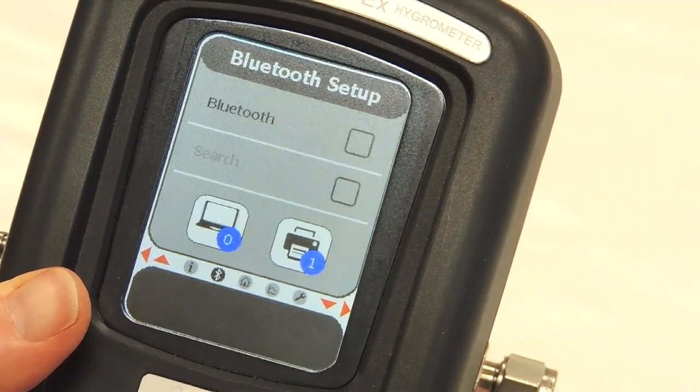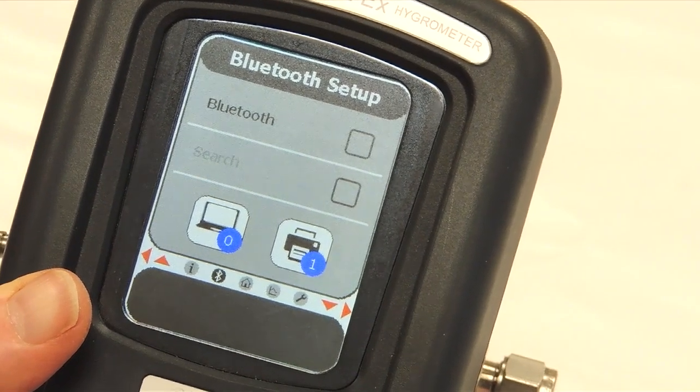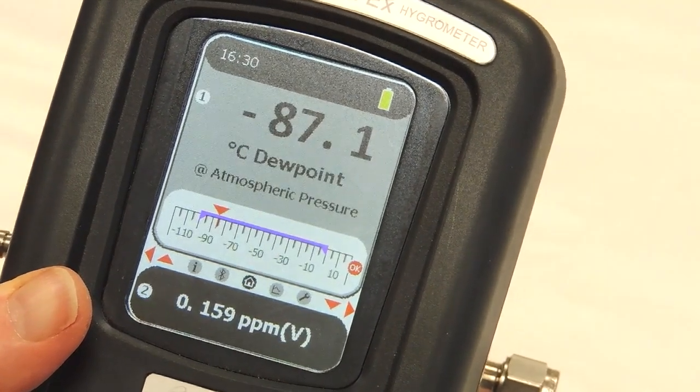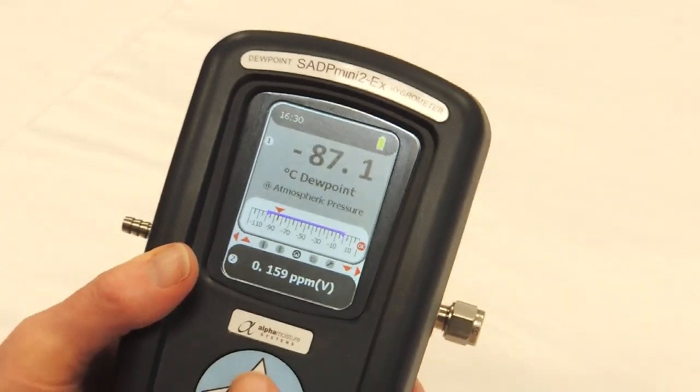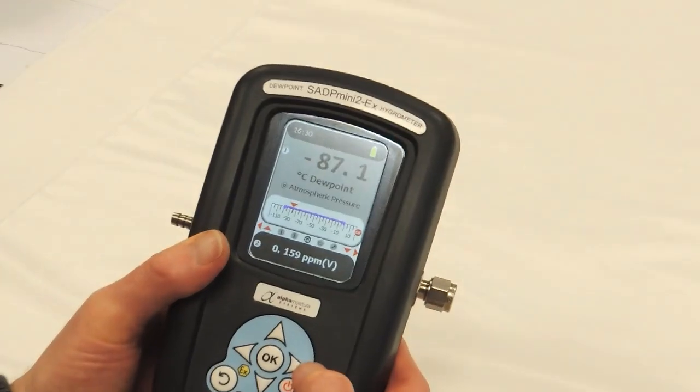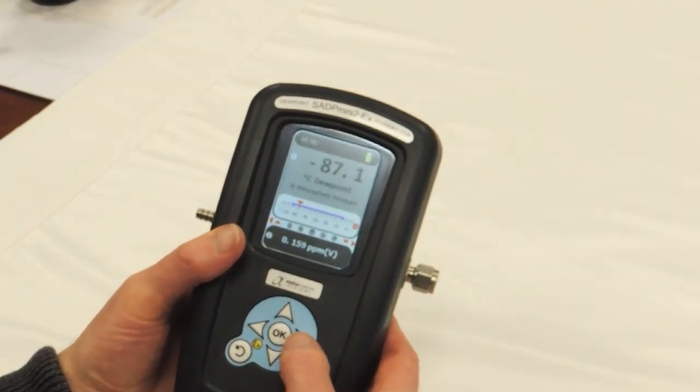We have a Bluetooth screen for setting up Bluetooth connection and then back to the main screen. Access some of the options using the up and down arrows and then from any screen you can go back to the home screen by pressing the home key here.